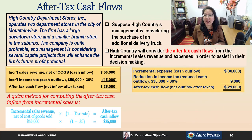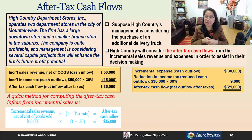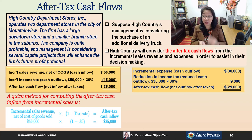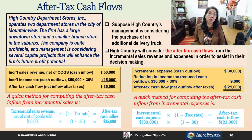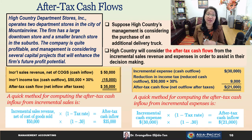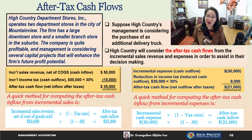For after-tax cash outflows: if the incremental expense is $30,000, we calculate $30,000 times the tax rate of 30%, which is $9,000 in tax savings. So the after-tax cash outflow is reduced from $30,000 to $21,000. The quicker method is to multiply $30,000 by (1 minus the tax rate): $30,000 times 0.7 equals $21,000.